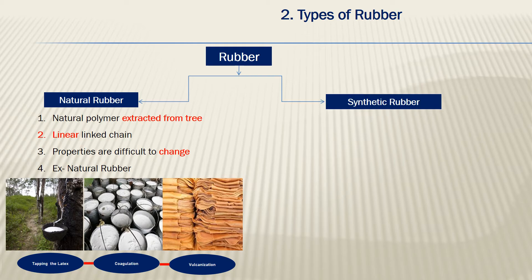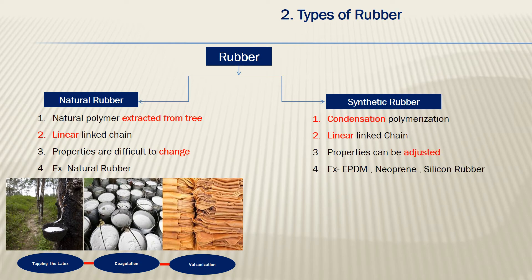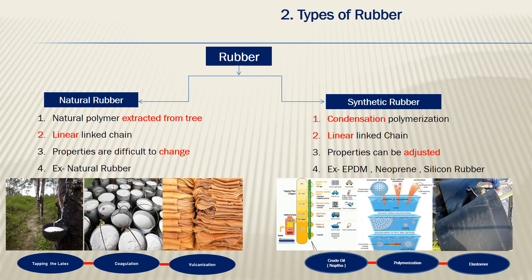The second category is synthetic rubber. Synthetic rubber is an artificially chemical-processed rubber, produced through condensation polymerization. It also has a linear link chain. The uniqueness of this rubber is that its properties can be adjusted based on the application. Examples are EPDM, Neoprene, and Silicone rubber. Naphtha is the basic material for rubber production, derived from crude oil. It further goes through a polymerization chemical process, and the raw material of elastomer coming out of the polymerization process is the basic raw material for further production of rubber products.